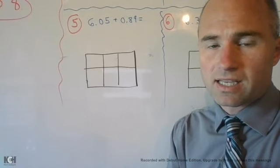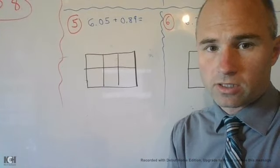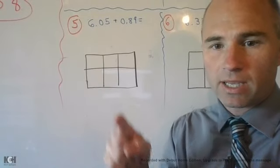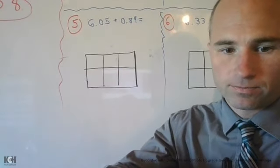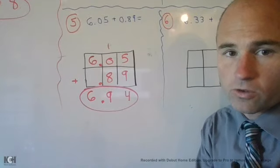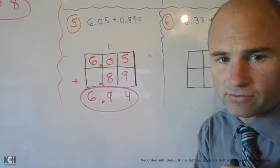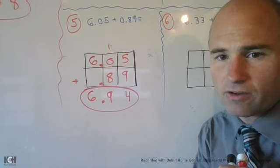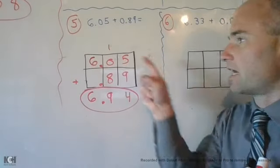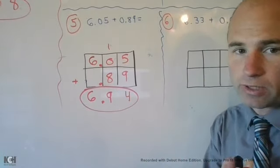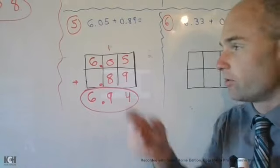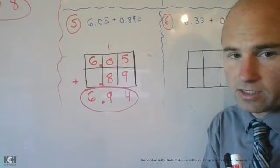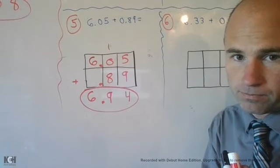Okay, so here we have 6 and 5 hundredths plus 89 hundredths. Go ahead to add these numbers up by hitting the pause button now. So, the solution you should have received for this would have been 6 and 94 hundredths. If you only got 6 and 84 hundredths, it's because you had forgotten to carry over the 1 from the hundredths place value. When you get 5 plus 9 hundredths, you would have gotten 14 hundredths carrying that 1 over to the tenths place value.